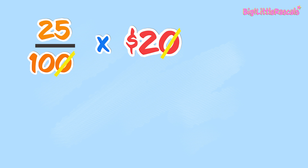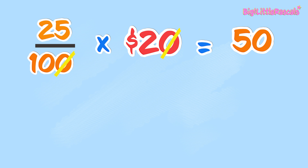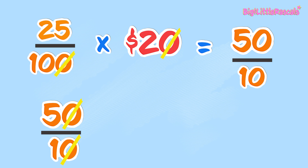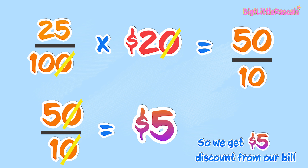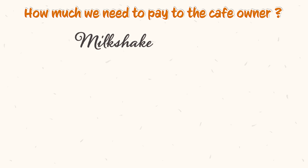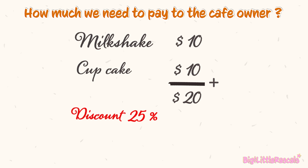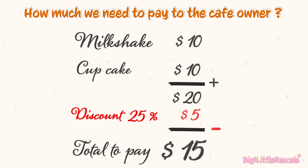The total bill is $20. So 25% off from $20 is 25 out of 100 times $20. Cross out the same zeros — what we have left is 25 times 2, which equals 50, and the bottom number left is 10. Cross out those zeros and it leaves us $5. So how much do we need to pay the café owners? After 25% discount: $20 deducted by $5 is $15. Yay, we are saving some money!